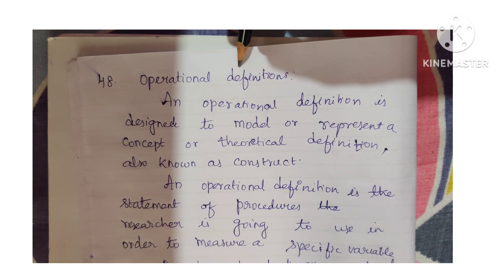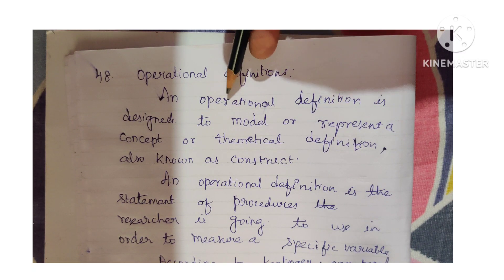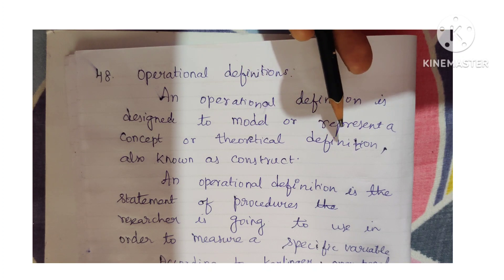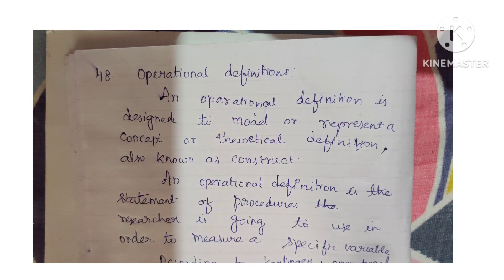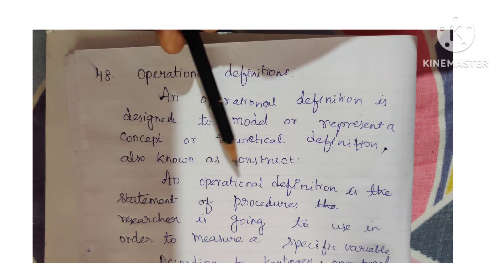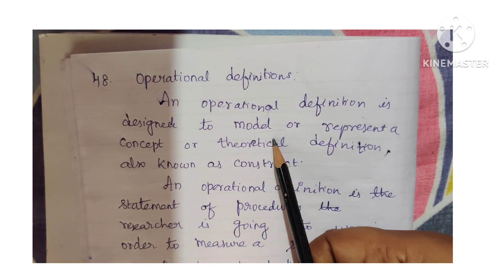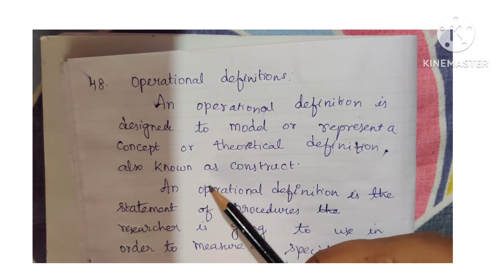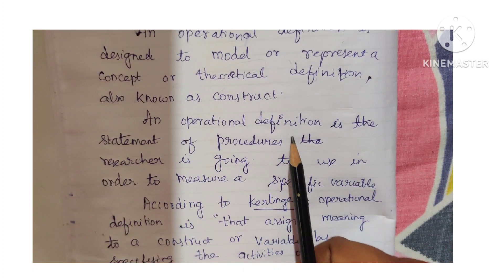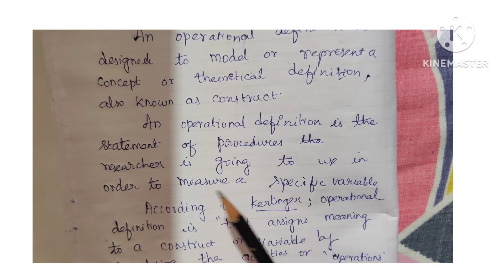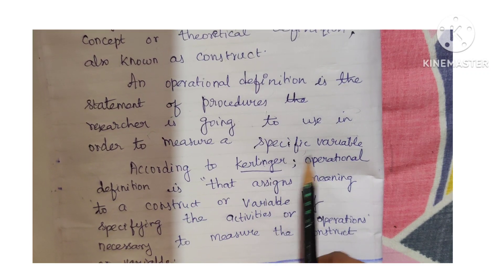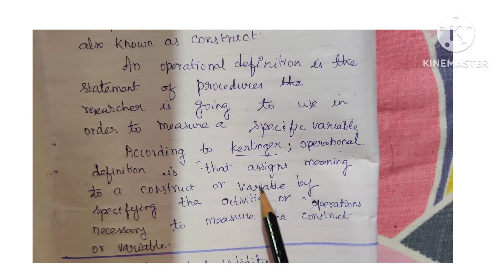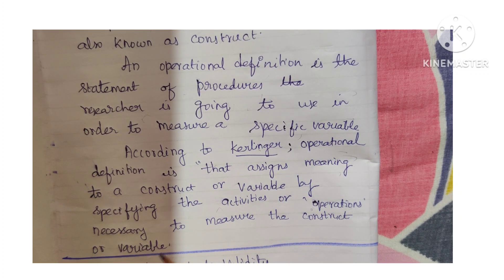Question 48: Operational definition. An operational definition is designed to model or represent a concept or theoretical definition, also known as a construct. An operational definition is the statement of procedures the researcher uses to measure a specific variable. According to Kerlinger, an operational definition assigns meaning to a construct or variable by specifying the activities or operations necessary to measure the construct or variable.